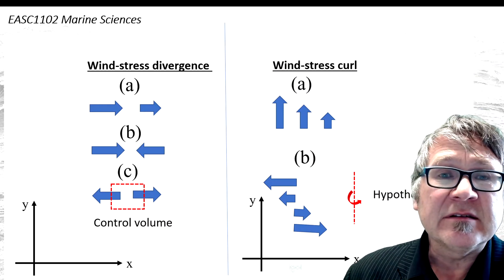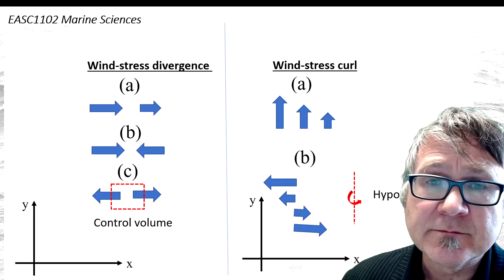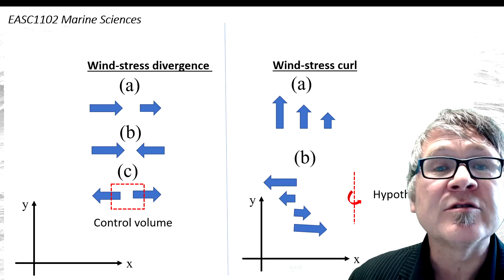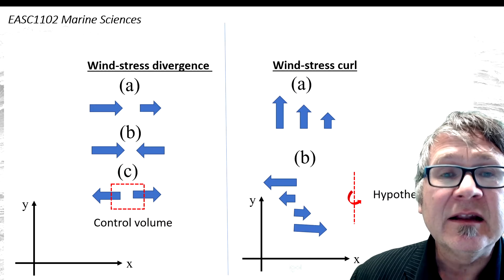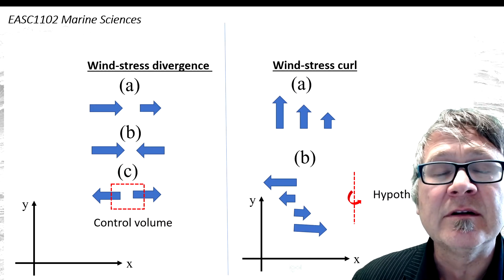If air is coming in, it's called convergence. If more air is leaving horizontally, it's called divergence.